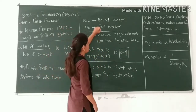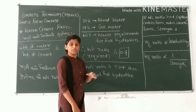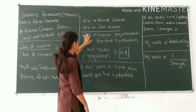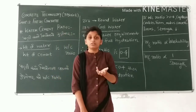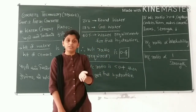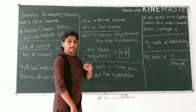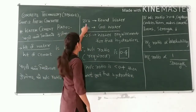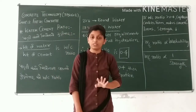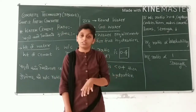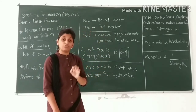The water requirement is bound water. Additionally, around 17% of water is stored as gel water. So in total, 23% plus 17% gives us 40% of water by weight of cement required for complete hydration, meaning the required water-cement ratio is 0.4.